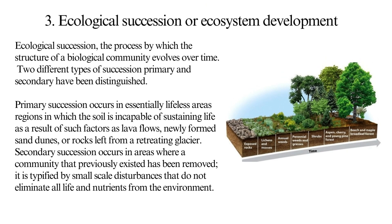Ecological succession, or ecosystem development: ecological succession is the process by which the structure of a biological community evolves over time. There are two different types — primary and secondary. Primary succession occurs in essentially lifeless areas or regions in which the soil is incapable of sustaining life, as a result of such factors as lava flows, newly formed sand dunes, or rocks left from a retreating glacier.